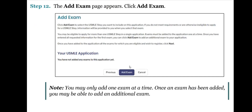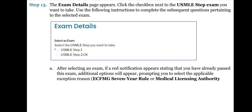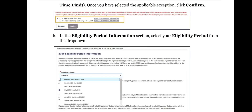Step 12: The Add Exam page appears. Click Add Exam. Note that you may only add one exam at a time; once an exam has been added, you may be able to add an additional exam. Step 13: The Exam Details page appears. Click the checkbox next to the USMLE step exam you want to take. After selecting an exam, if a red notification appears stating that you have already passed this exam, additional options will appear prompting you to select the applicable exception reason — ECFMG 7-year rule or medical licensing authority time limit. Once you have selected the applicable exception, click Confirm.